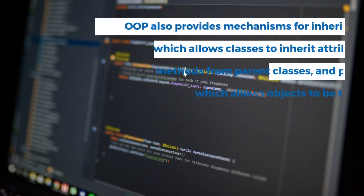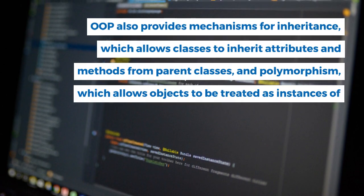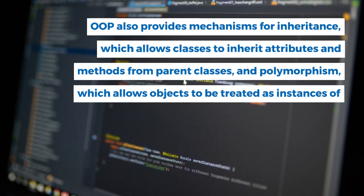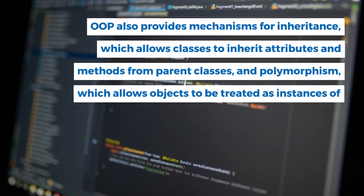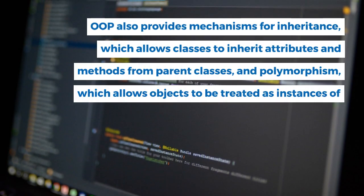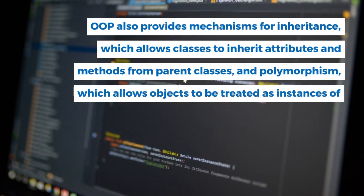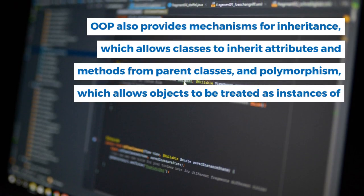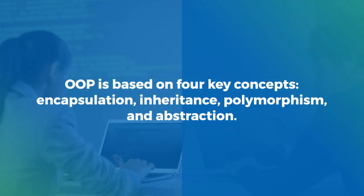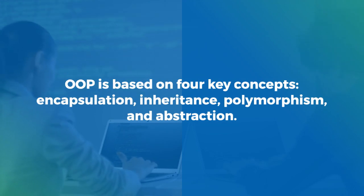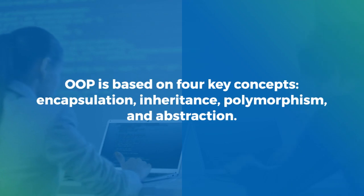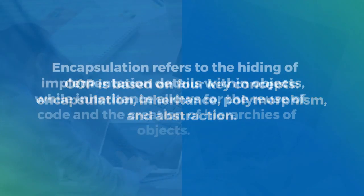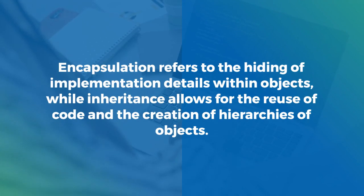OOP is based on four key concepts—encapsulation, inheritance, polymorphism, and abstraction. Encapsulation refers to the hiding of implementation details within objects, while inheritance allows for the reuse of code and the creation of hierarchies of objects. Polymorphism allows objects to take on different forms or behaviors depending on the context, and abstraction provides a way to model complex systems using simplified, high-level concepts.